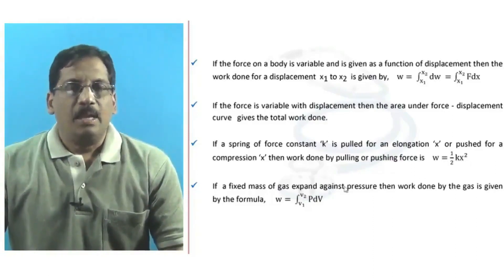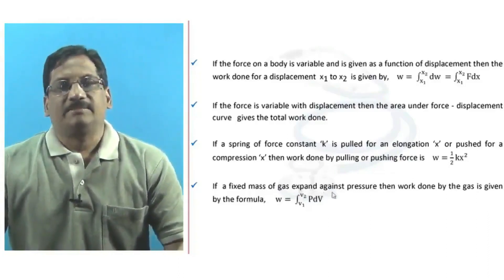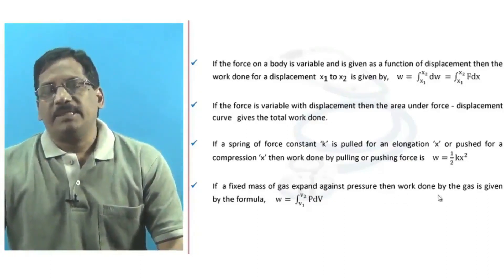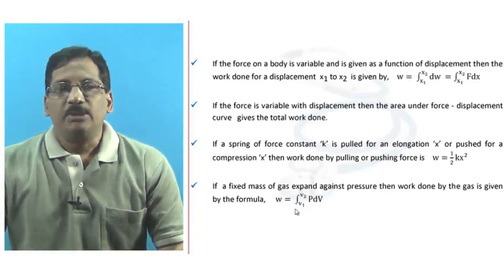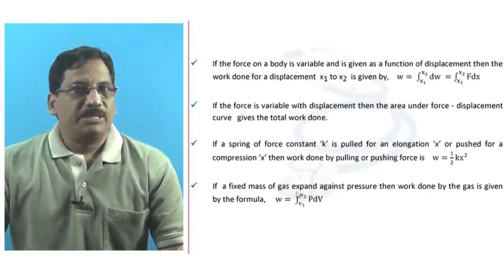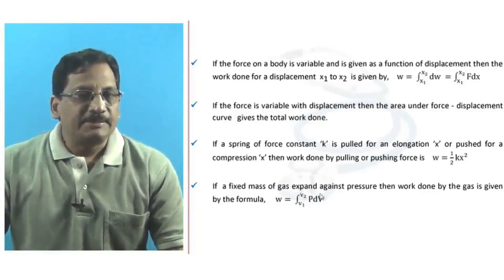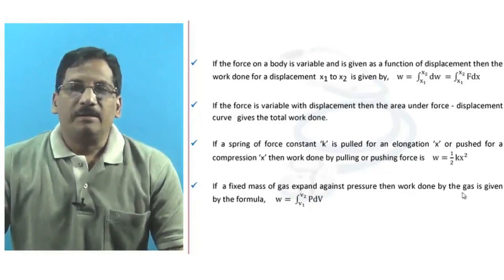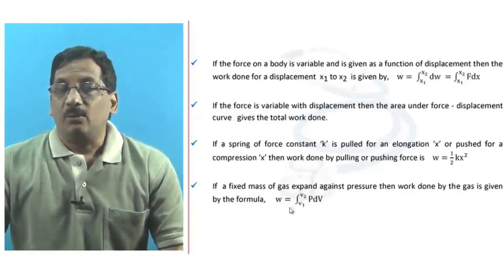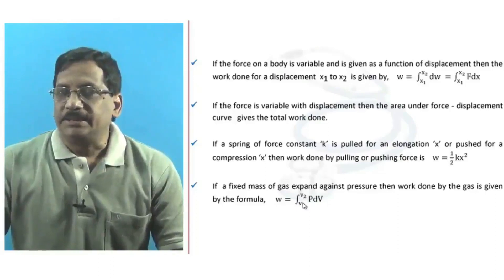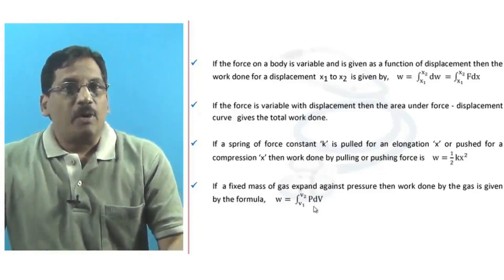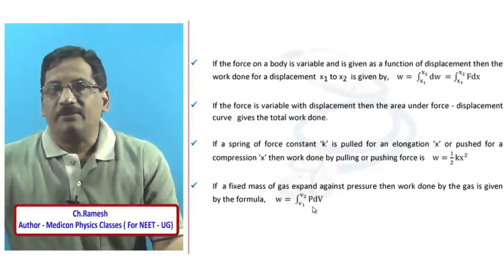If a fixed mass of gas expands against pressure, the work done by the gas is given by W = ∫P dV with limits V₁ to V₂. How to apply this formula and calculate work done is explained in the numerical video. These are all the various formulae for different contexts of calculation of work done.